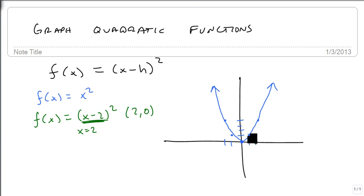We're over here. And then from there, we go over 1, up 1, and then over 1, up 3. And we get the same graph, but notice that we shifted it to the right two places.